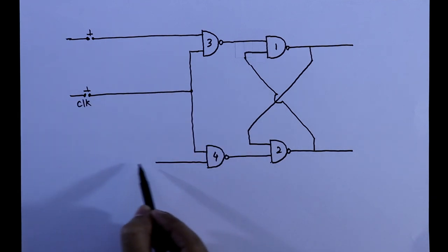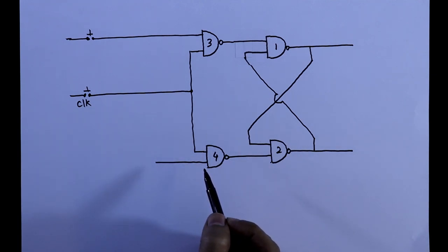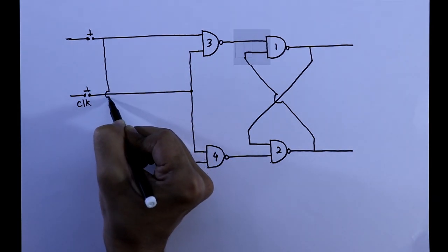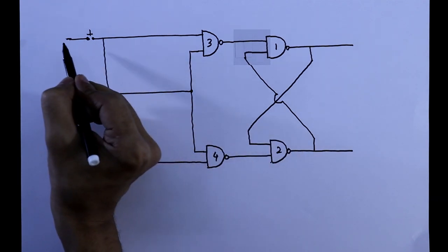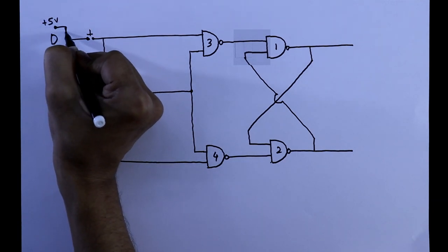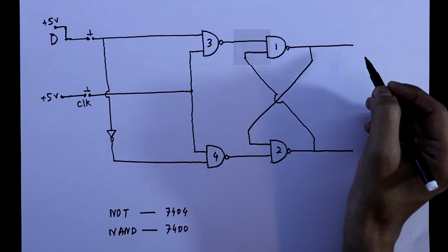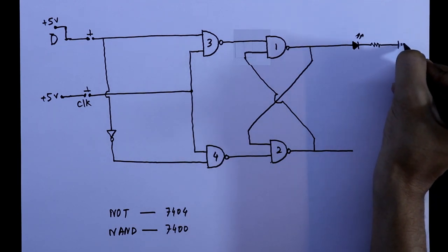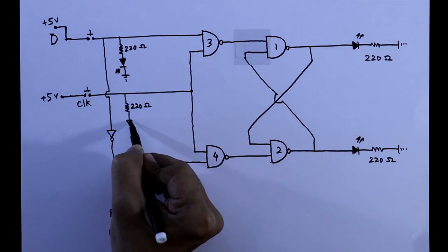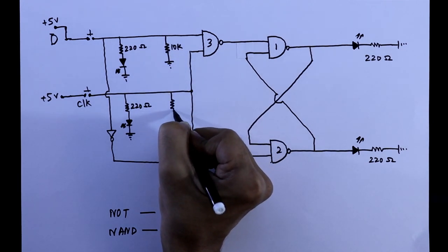If we provide another input here then it will be SR flip-flop. To make it D flip-flop we will connect a NOT gate with this input. For the SR flip-flop it was S and now it is D. So here these are the two inputs. To see the output we have to connect LEDs with a series resistor 220 ohms. And to see the input here also we will connect LEDs, and also with the input we have to connect the pull-down resistors, these are 10 kilo ohms.